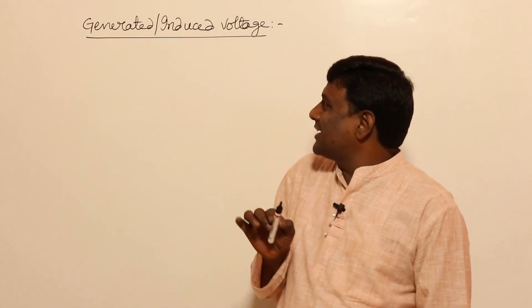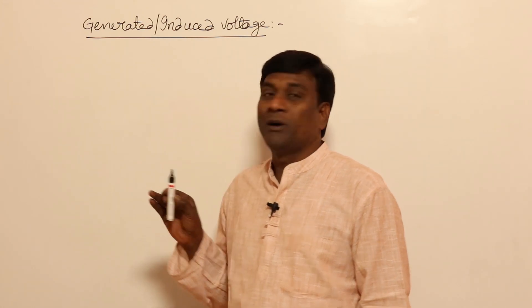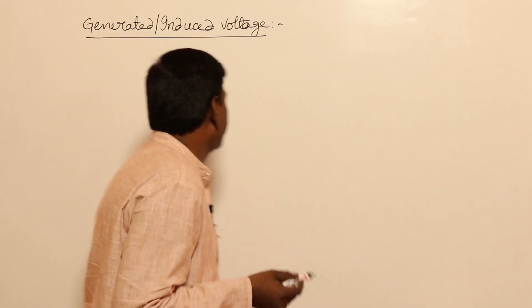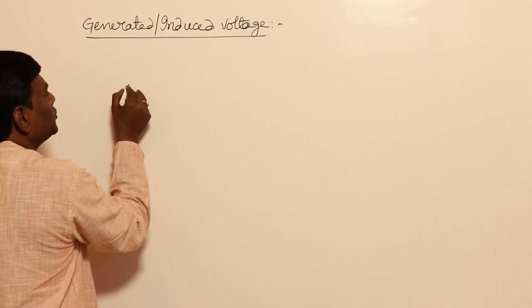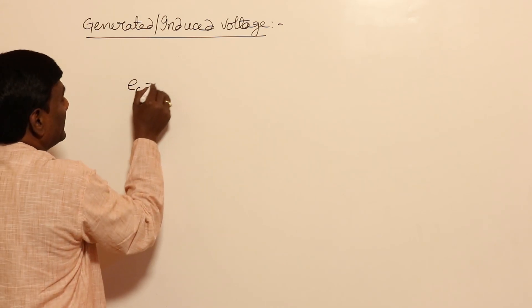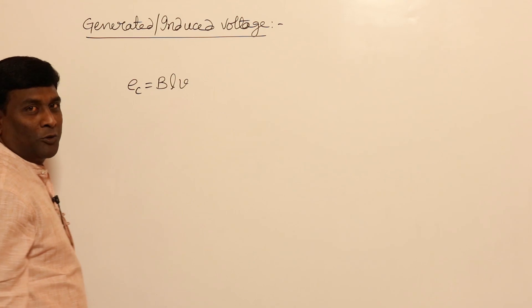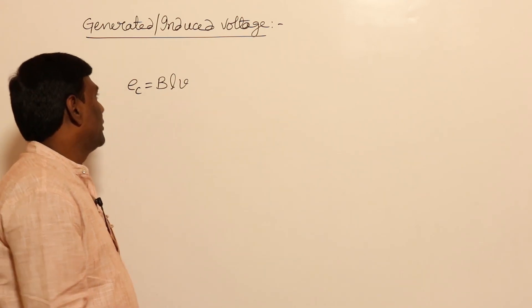In this session, we have to discuss — we are all set to enter into problems of DC machines. One backlog is that power flow should be known and induced voltage. What is the induced voltage in a conductor? I know that this is going to be B, L, V — where V is not voltage, V is nothing but velocity of the conductor.